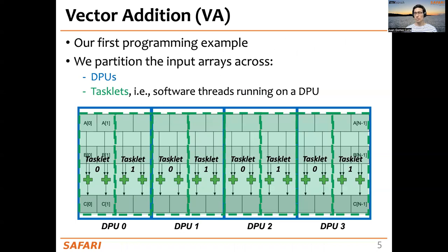In our previous lecture, we talked about programming the UPMEM PIM architecture, and we mentioned vector addition as our first programming example. The general approach for any workload on the UPMEM-based PIM system — and also in other parallel systems — is to partition the workload and the inputs evenly across the different workers, in this case the DPUs and the tasklets, which are the software threads running on the DPU.